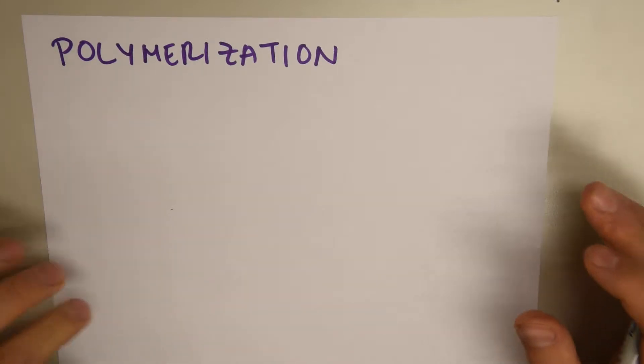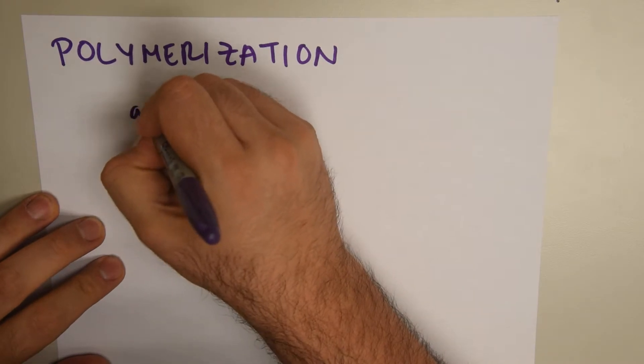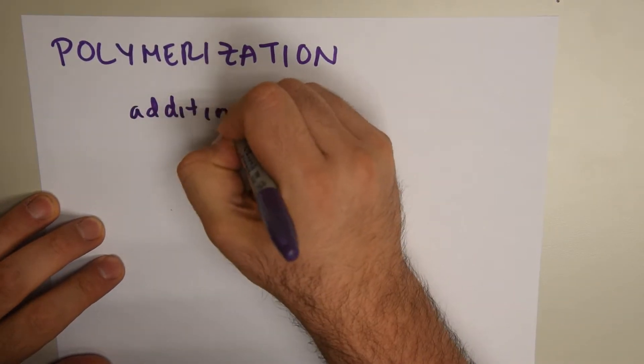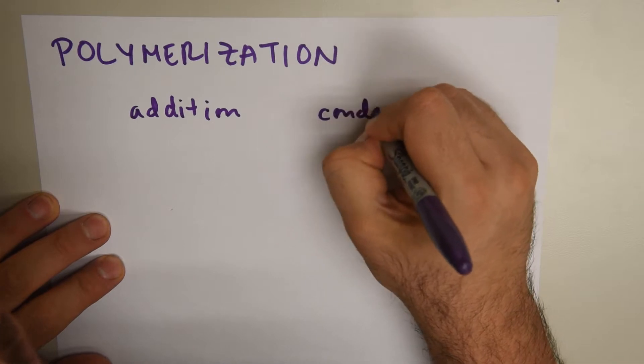Now, let's look at this. There are two ways to create polymers. One is addition, and the reactions we're going to talk about right now are addition reactions, and the other ones are condensations.